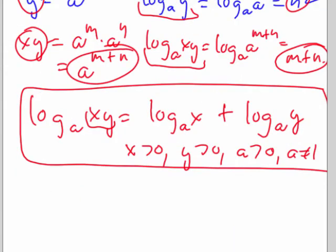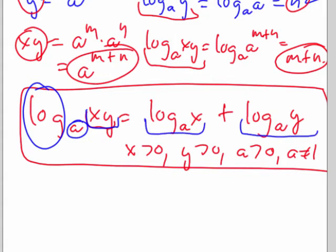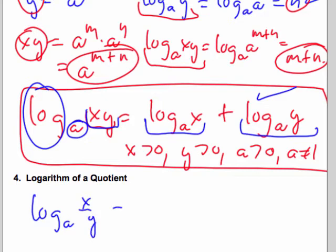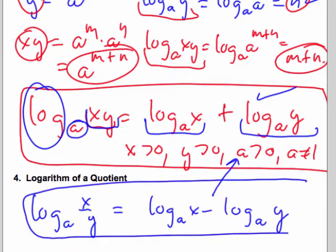So we have shown that the log of a product equals the sum of the logs of each factor, assuming x greater than 0, y greater than 0, a greater than 0, and a not equal to 1. In a similar way, one could prove that the log of a quotient is the difference of the logs, assuming the same restrictions.